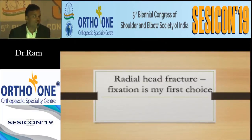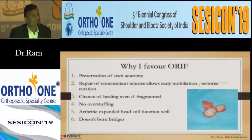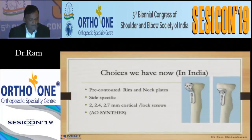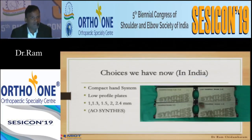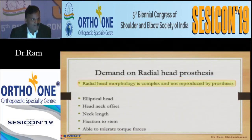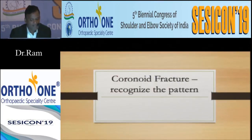Radial head fracture fixation is my first choice. I favor it because it always preserves the native anatomy, repair of concomitant injury is possible, there is a chance of healing even if fragmented, and there is no over-stuffing like with a replacement. I use headless compression screws, radial head rim plates, and hand surgery implants for fixation. If not fixable, as a last resort we go for radial head replacement, because radial head morphology with its offset is complex and not reproduced reliably by any prosthesis, and it carries a high risk of complications.